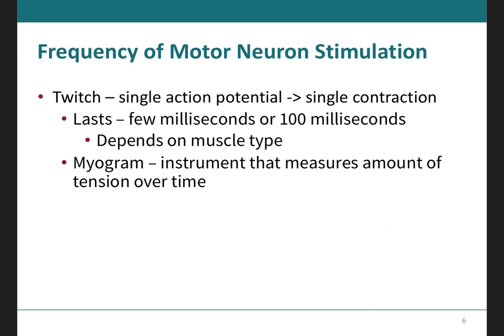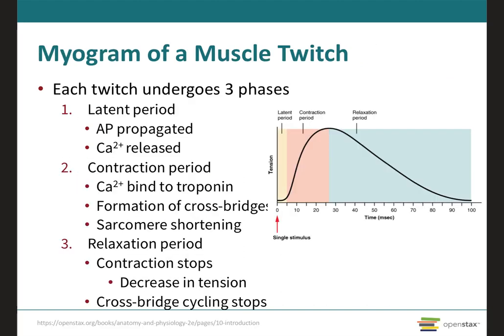A twitch is a brief contraction of a group of muscle fibers within a muscle in response to a single action potential, producing a single contraction. In a lab, a twitch can be produced by surgically removing a muscle from an animal and electrically stimulating it. An equipment called a myogram measures the amount of tension over time, and a twitch can last from a few milliseconds to a hundred milliseconds depending on the type of muscle.